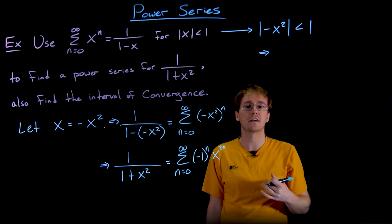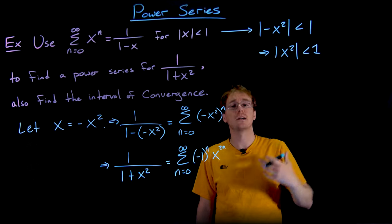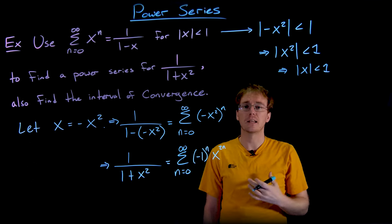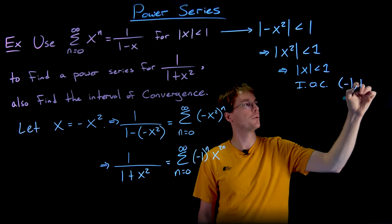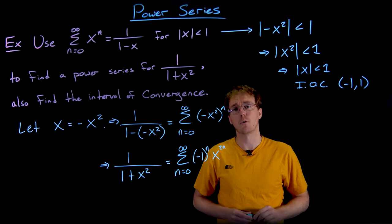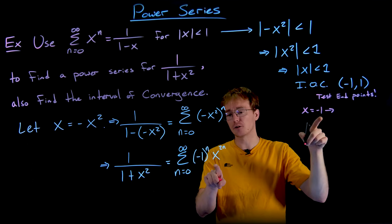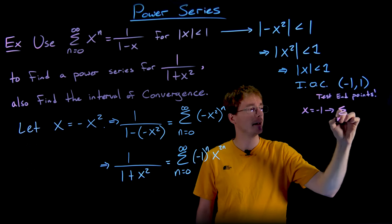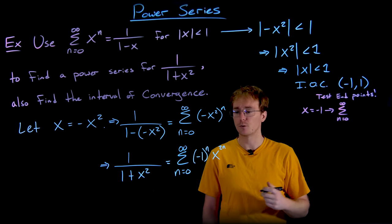The original geometric series had interval of convergence |x| < 1. Substituting x with -x², the new inequality becomes |-x²| < 1. The absolute value of -x² equals the absolute value of x², and |x²| < 1 whenever |x| < 1. So the interval of convergence is the open interval from -1 to 1, and we still need to check the endpoints.